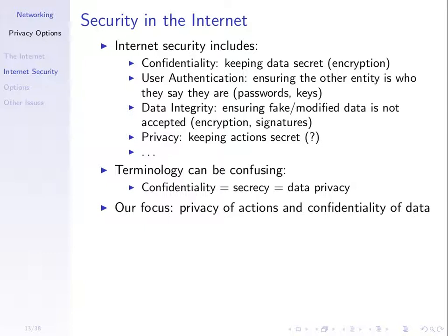Privacy is different from confidentiality. Confidentiality is keeping your data secret; privacy is keeping your actions secret. The actions may be who you're communicating with, at what time — not necessarily the content of communications, but how you're communicating. We haven't really talked about how to achieve privacy. We know how to achieve confidentiality — encrypt our data. Sometimes these words are used to mean the same thing, but for this topic, privacy means secrecy of your actions, especially the secrecy of who you're communicating with.